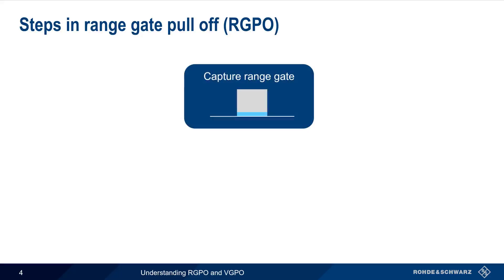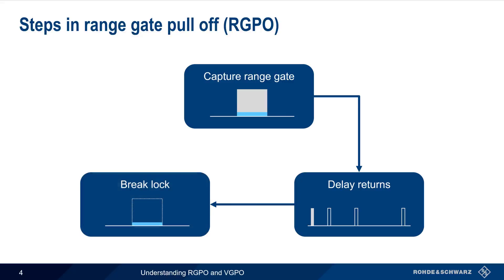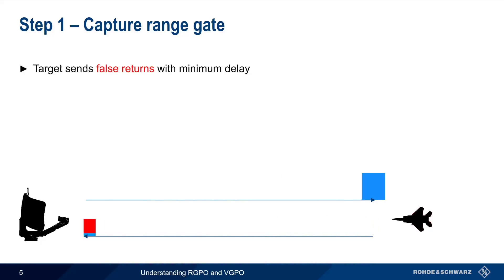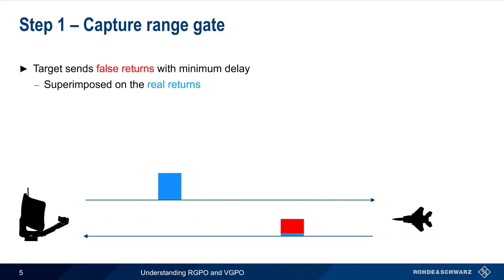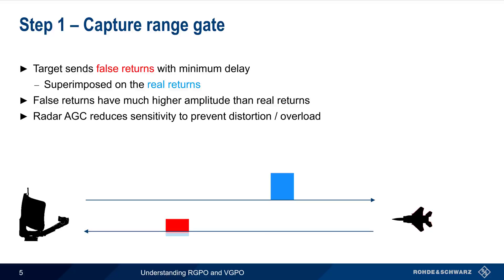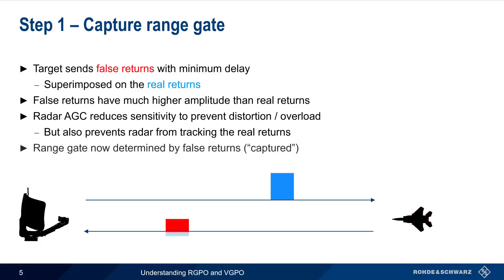There are three steps in Range Gate Pull-Off: capturing the range gate, delaying the returns, and breaking lock. This process is usually repeated multiple times. The first step involves sending false returns with the minimum possible delay, meaning the false returns are essentially superimposed on the real returns. Note that the false returns, here shown in red, have a much larger amplitude than the real returns. At this point, the target is actually making itself more noticeable to the radar. In response, the radar's automatic gain control will reduce its sensitivity to prevent distortion or overload. This decreased sensitivity also prevents the radar from being able to track the real, lower-amplitude returns. The range gate is now being defined by the false returns generated by the target — this is sometimes referred to as capturing the range gate.